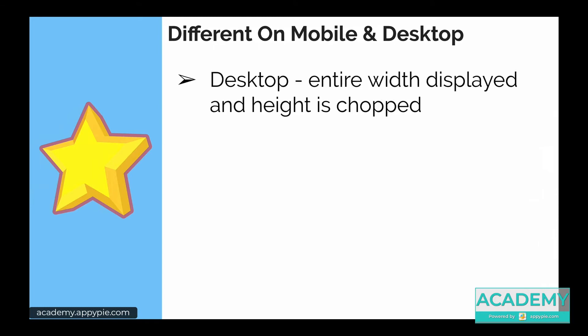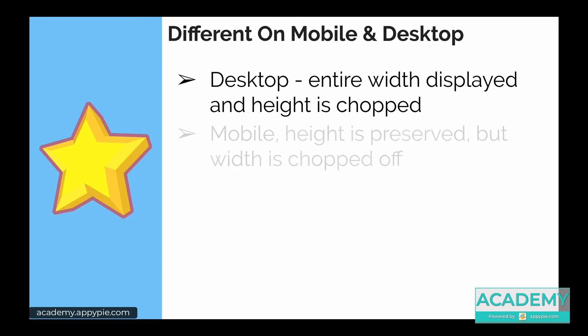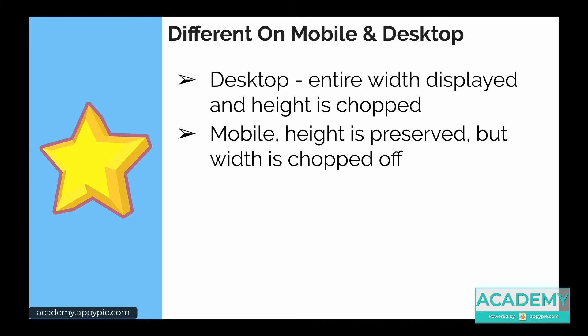On desktop, the entire width is displayed and the height is typically chopped off. On mobile, the height is typically preserved or chopped off a little bit, but the width is chopped off by quite a bit.